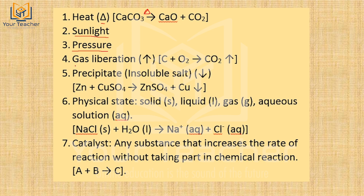This reaction is under heat: carbon plus oxygen gives carbon dioxide. Carbon dioxide is a gas, so it is shown with an upward arrow (↑) to indicate gas evolution. A gas released as a product is shown with an upward arrow. For insoluble salts that precipitate out of solution, a downward arrow (↓) is used.